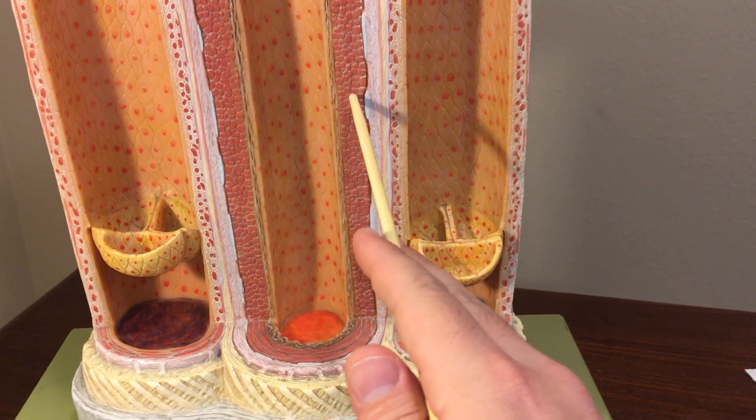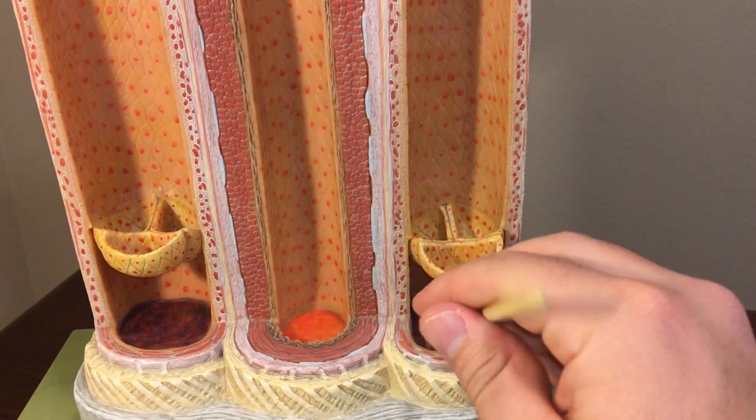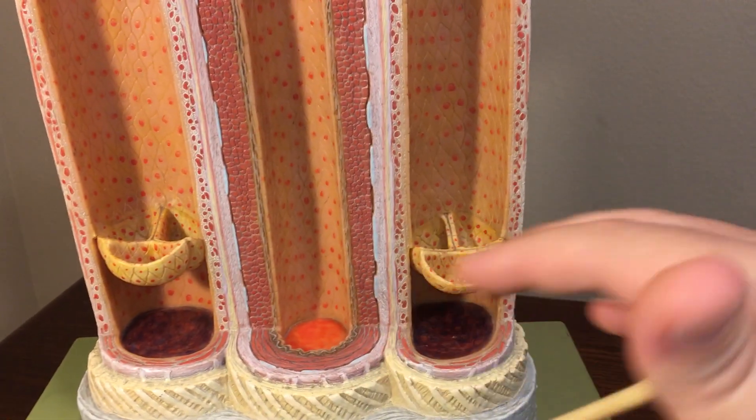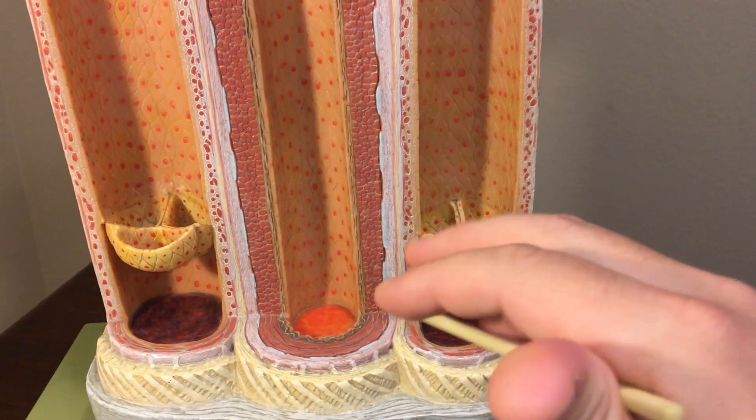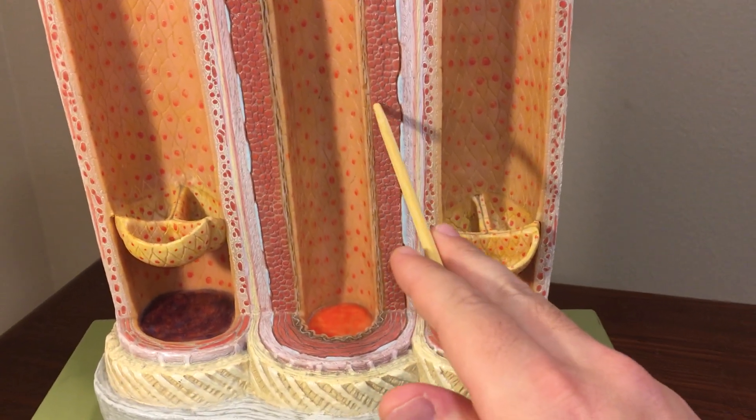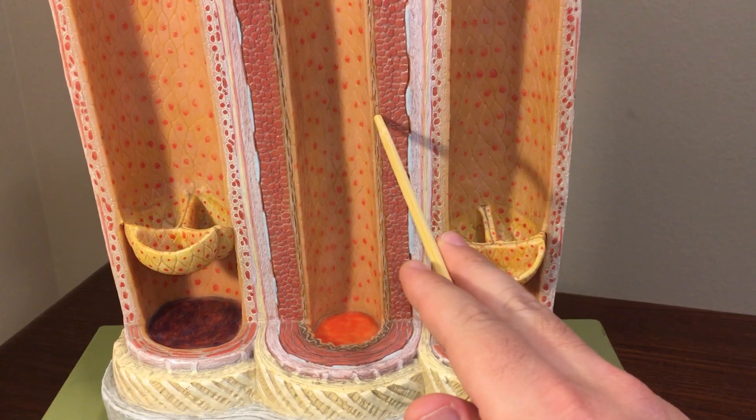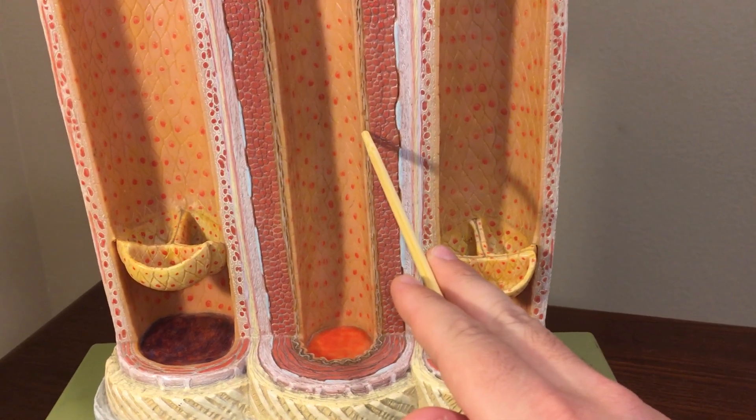And then this tunica media has a lot of smooth muscle and no elastic fibers, therefore this is a muscular artery. Also muscular arteries will always have an internal elastic lamina.